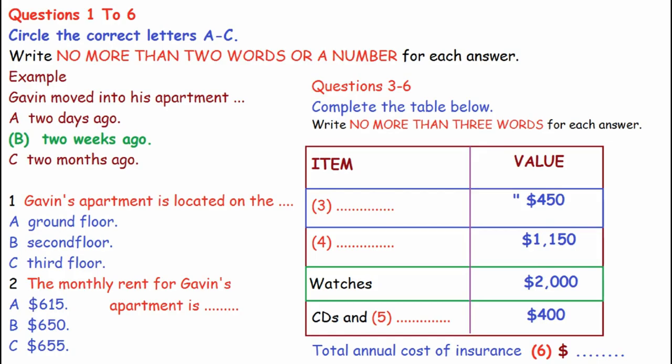Good morning, Diane Davis. Can I help you? Yes, I'd like to get some insurance for the contents of my home. Fine. When did you move into the house? A couple of weeks ago, and it's an apartment actually. I was told by the landlord that it would be a good idea to get some insurance for the furniture and other personal possessions. Gavin moved into his apartment two weeks ago, so B has been circled.